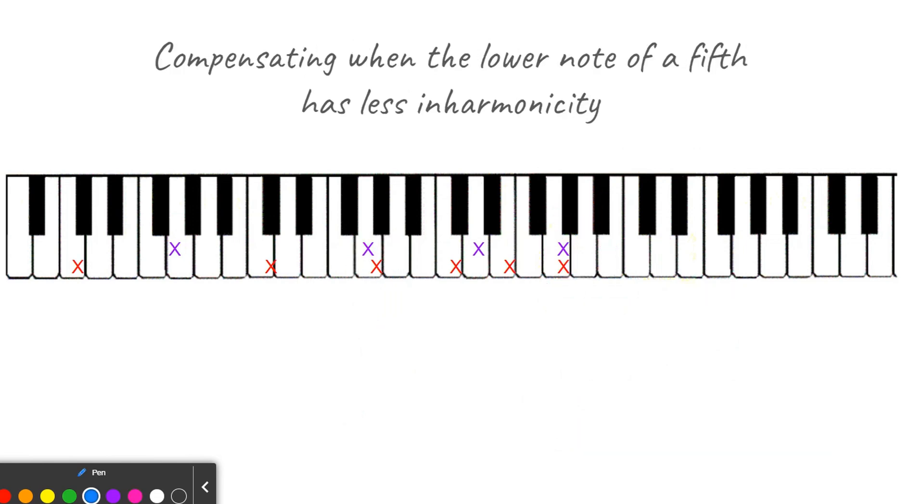So here's how we use this information. If we have a situation with the lower note of our fifth having less inharmonicity, and the upper note of our fifth having greater inharmonicity, then we're going to want to have this second coincident partial closer to pure, because this one is already narrow, the first one. If we tune the second one definitely narrow, this one could end up too narrow, and it can cause some annoying problems later on. So depending on how different they are, you're going to want to tune this just slightly narrow and close to pure, or even pure if the difference is great.